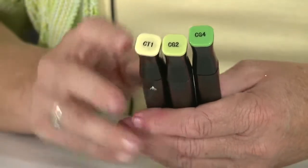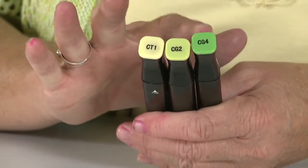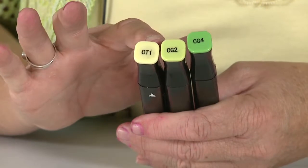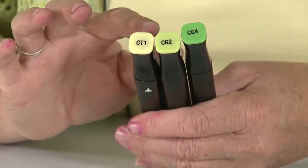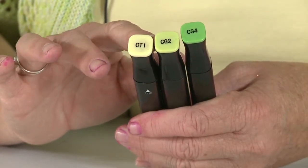But first I'm going to explain really quick our number system. The lower the number, the lighter the color. So you can see I have a CG4, a CG2, and a CT1. The lower the number, the lighter the color, but what's more important is the lighter colors have more solvent in them.